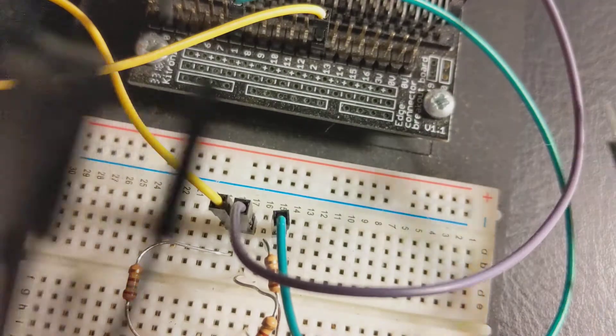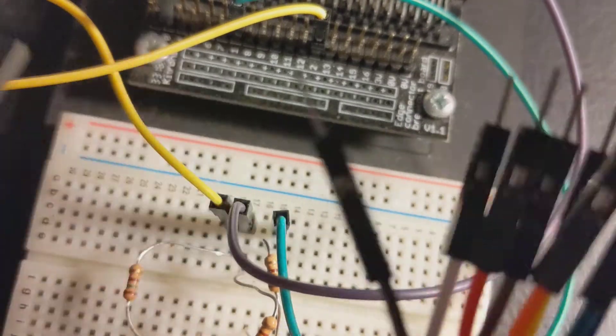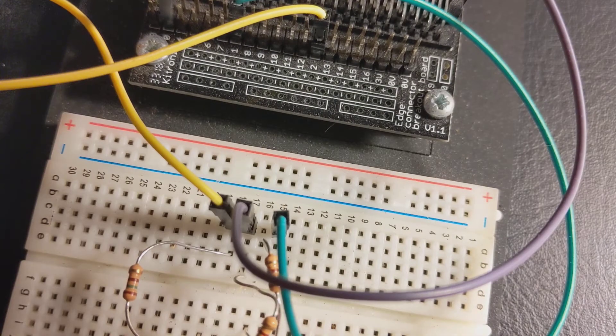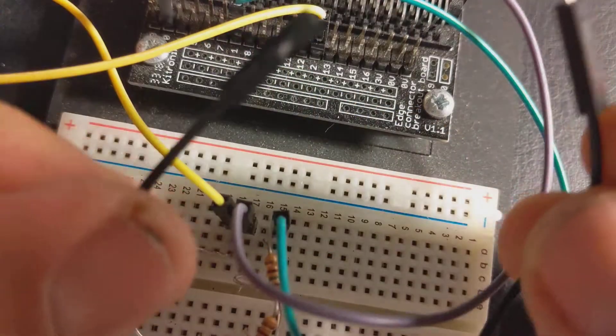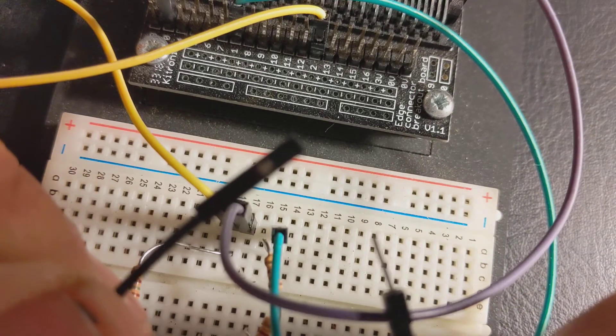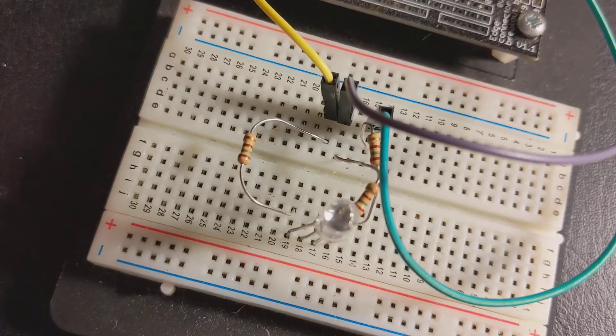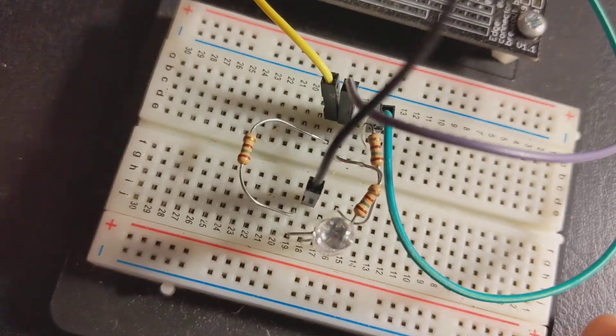The jumper leads have got a female end to them. That's this end here. They've also got a male end to them. Now that's really useful because if you just peel one of these jumper leads off, I've got a long black lead with one pin and one socket.